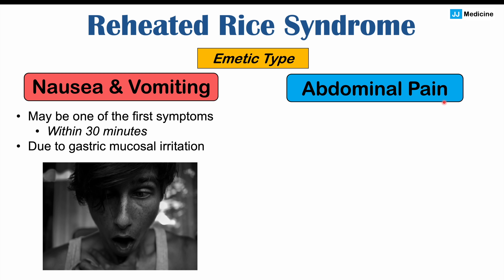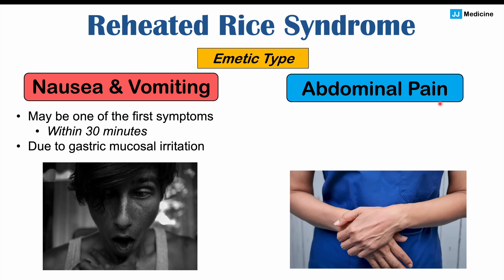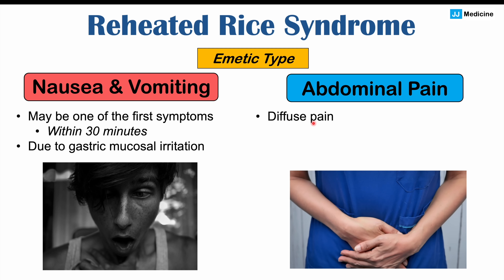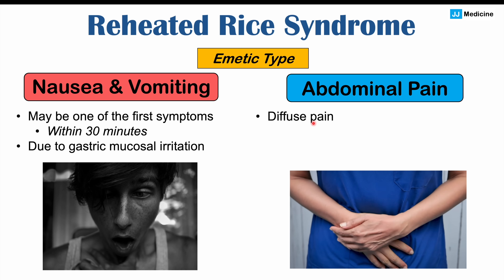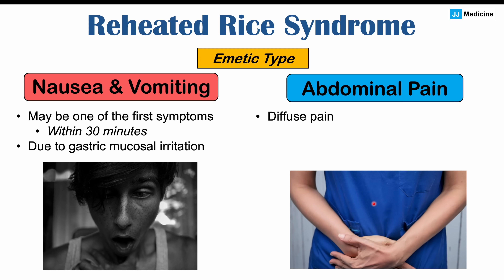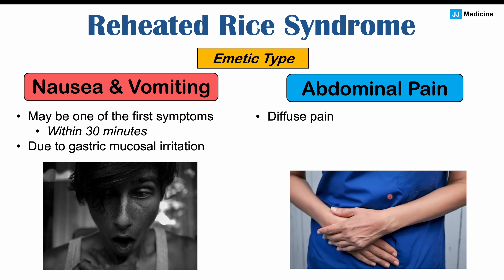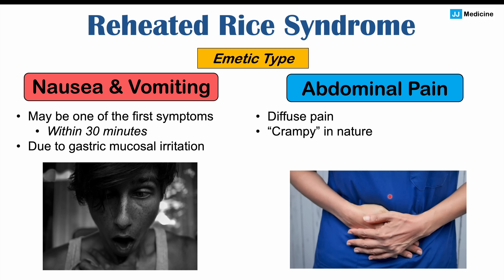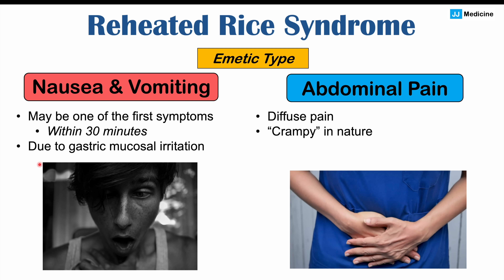Another possible symptom of the emetic type is abdominal pain. It may be diffuse, or more localized to the epigastric area — above the belly button, in the center of the abdomen where the stomach is located. It's going to be described as crampy in nature, and again it can be due to a similar effect where that toxin is leading to irritation and inflammation.